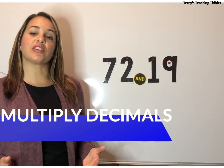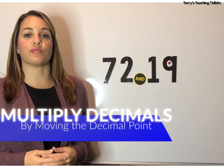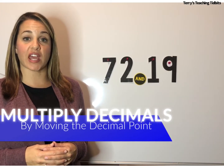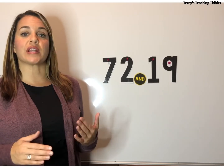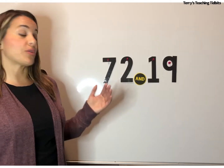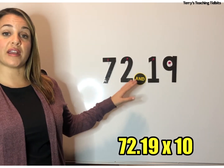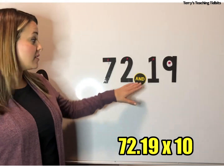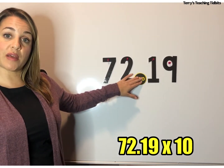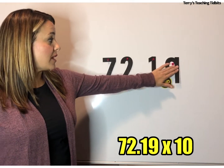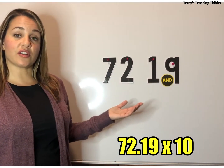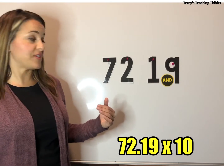Another strategy you can use to show students how to multiply decimals by powers of 10 is to actually move the decimal point. If you move the decimal point, it's going to move in the opposite direction that the digits would in the place value chart. So if you are multiplying 72 and 19 hundredths by 10, you take your decimal point and move it to the right one place. Now you have 721 and 9 tenths.